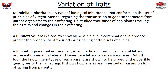As we talk about the variation of traits, we have what we call Mendelian inheritance. This type of biological inheritance conforms to a set of principles set up by Gregor Mendel regarding the transmission of genetic characters from parents to offspring. He was a monk who studied thousands of pea plants, tracking their traits and changes in offspring. A Punnett square is a tool to show all possible allelic combinations in order to predict the probability of offspring having certain sets of alleles. Capital letters represent dominant alleles and lowercase letters represent recessive alleles, and the known genotypes of each parent are used to predict possible genotypes of offspring.